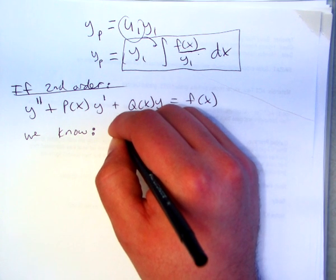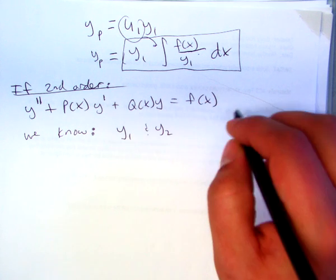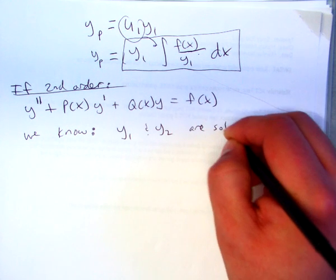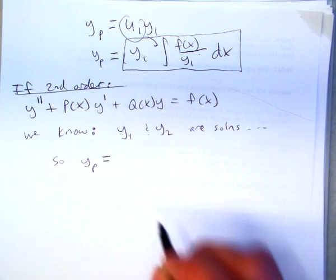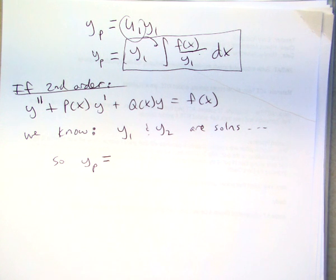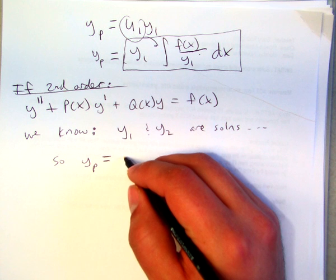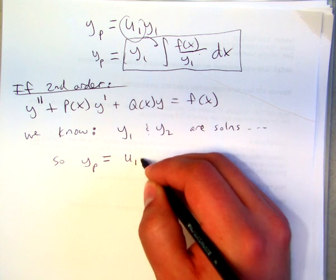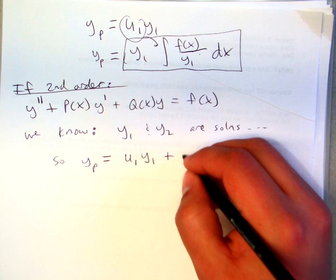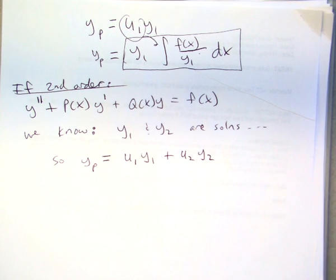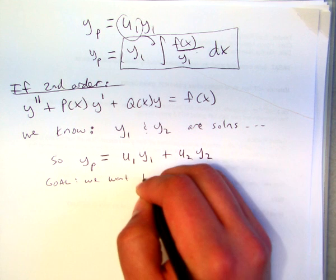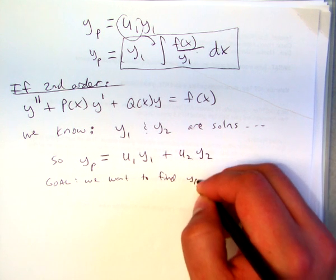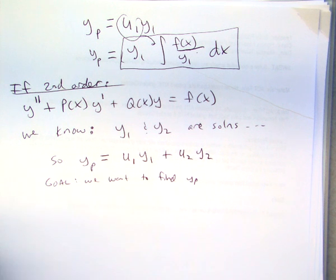So that y sub p, instead of now being u1, y1, should be what? What format should it have? Variable parameter for y1, superposition, variable parameter for y2. This is our goal. We want to find y sub p based on this scenario.